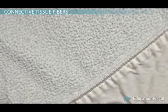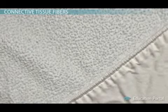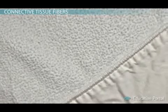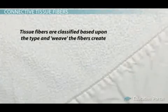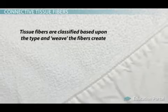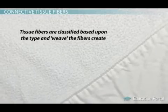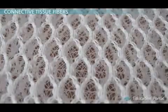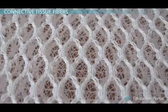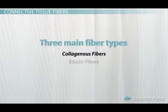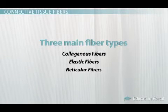Let's focus on the fibrous material created by fixed cells in connective tissue. Tissue fibers are classified based upon the type and weave the fibers create. There are different types of weave, just like we have different types of fabric which make up our clothes. The three main fiber types are collagenous fibers, elastic fibers, and reticular fibers.